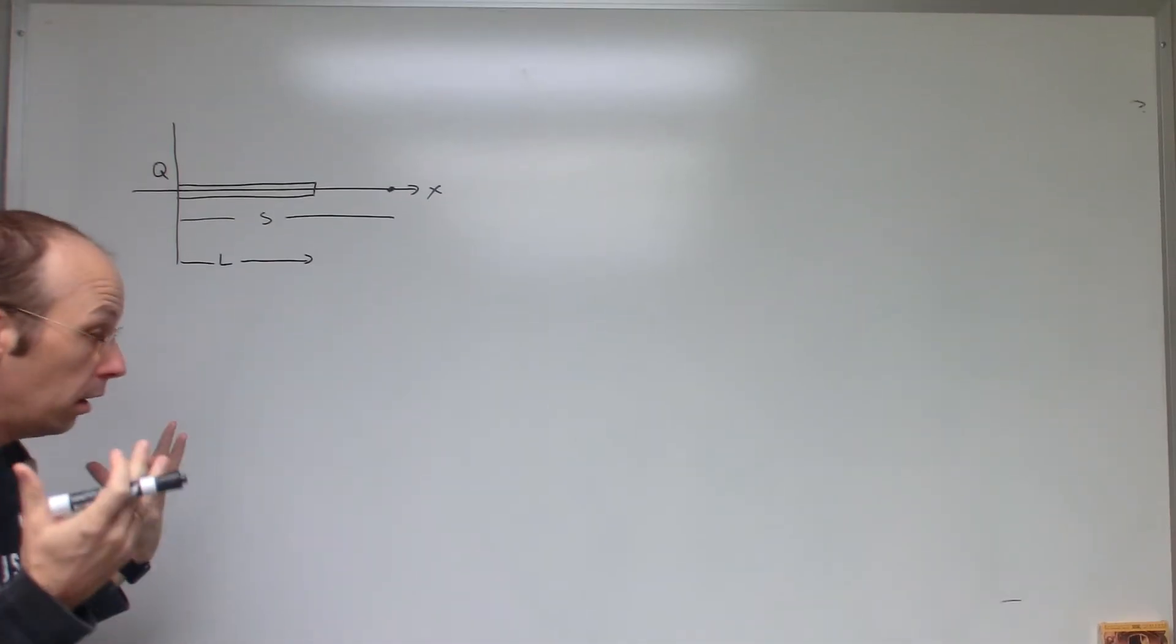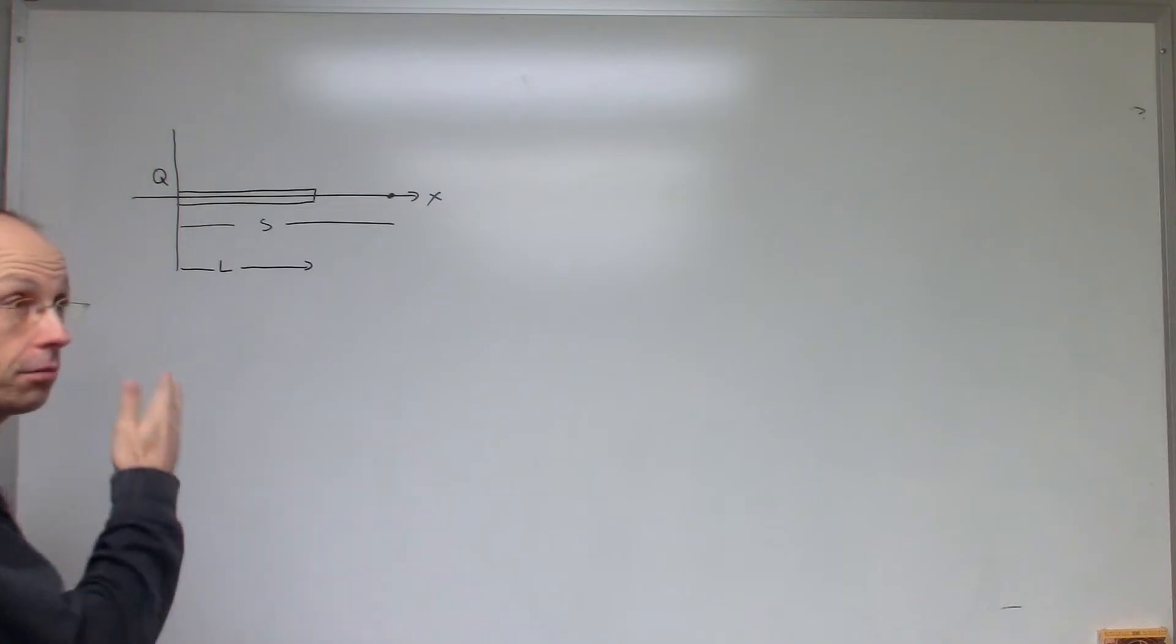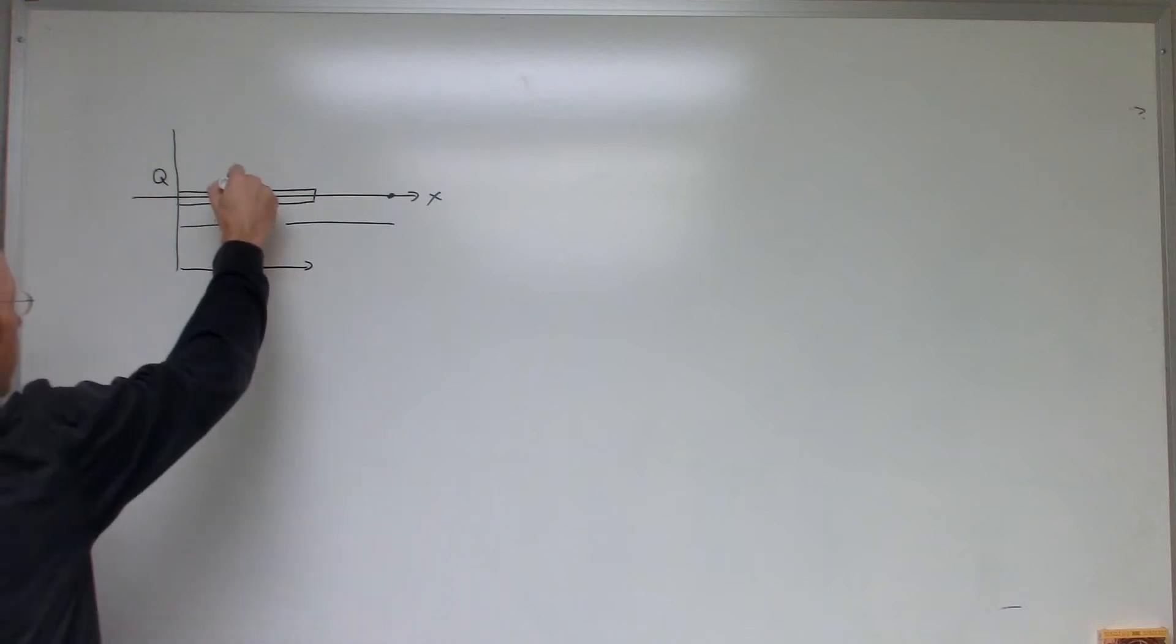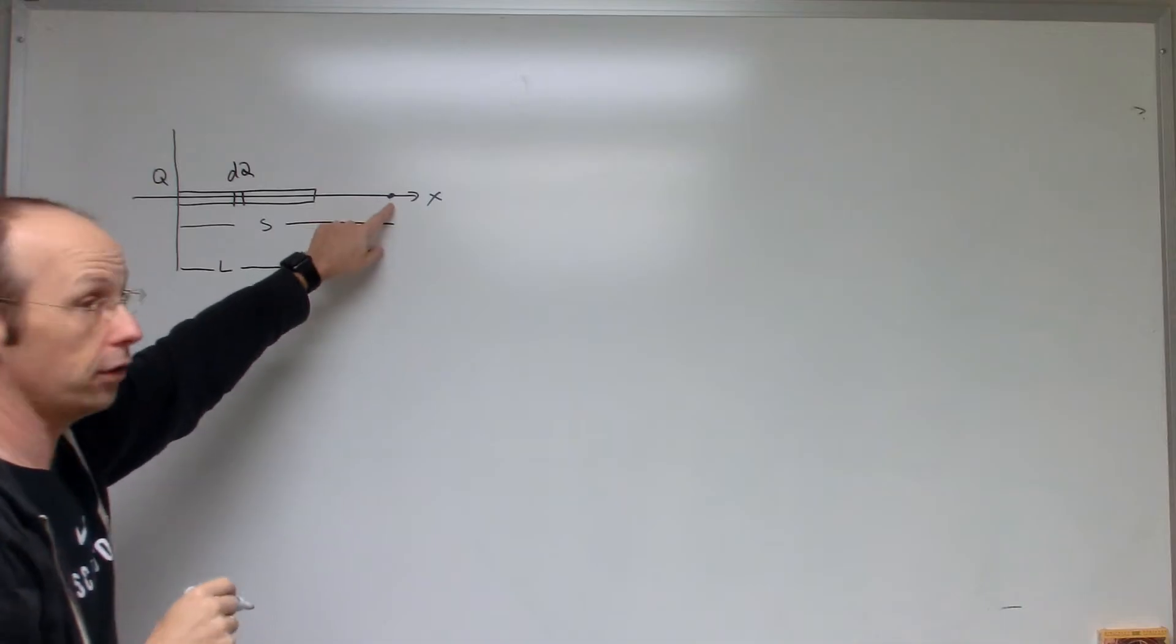So, I mean, we're still going to do things the same way. We're still going to break it into small pieces, add up the electric field due to all these little pieces. So let's just break this into a little piece right here. There's a typical piece, DQ, and I want to find the electric field right there.